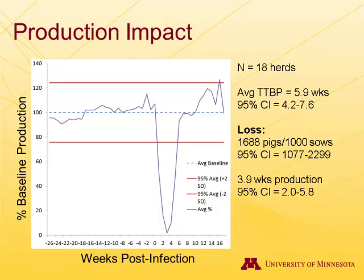From this we've gathered our average time to baseline production — from starting to lose piglets, going down to producing nothing, to coming back up and actually producing what you're supposed to. We've seen that takes about 5.9 weeks after the initial detection of the infection, with a 95% confidence interval of 4.2 to 7.6 weeks.